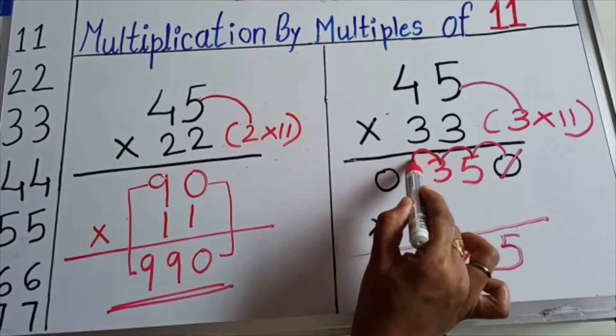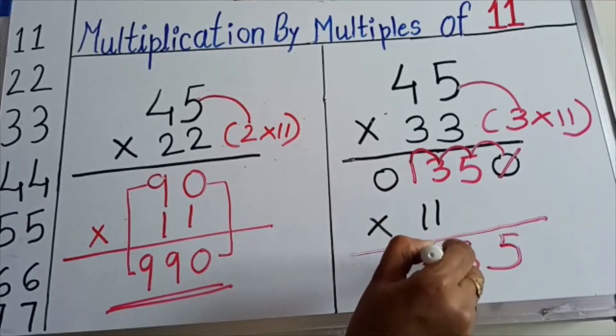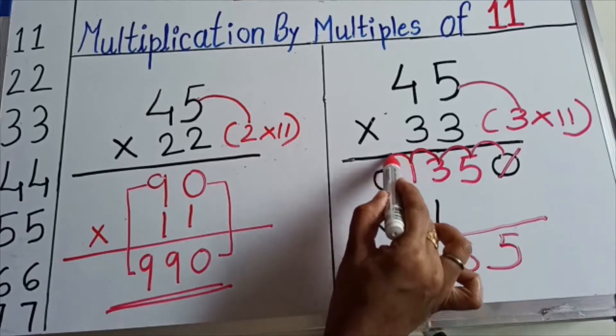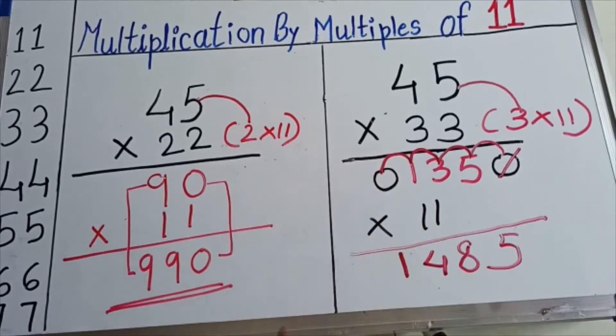3 plus 1 gives you 4 and 1 plus 0 gives you 1. This is your final answer.